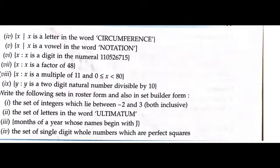Next question: x where x is a letter in the word CIRCUMFERENCE. Whatever letters are in circumference, we just have to take care that we won't include repeated letters. So first is C, then we have I, R, U, M.